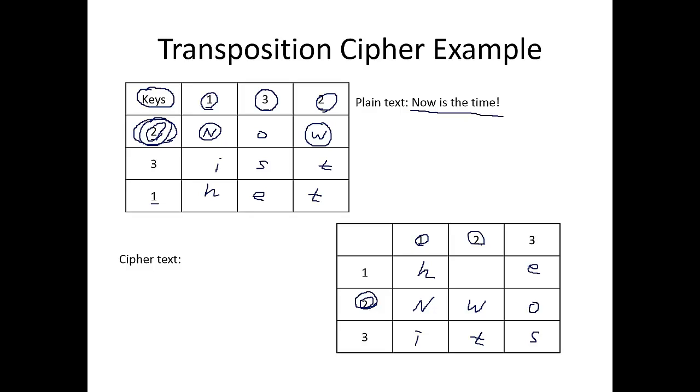And then finally, the last one says column two, row one. So that's actually this one. So the encrypted text becomes, based on the transposition cipher, this. So it's H T E N W O I T S. So this is completely different from the plain text, as you can see.